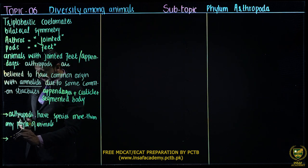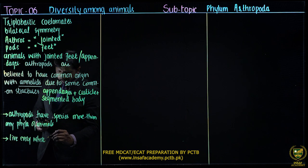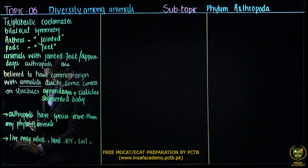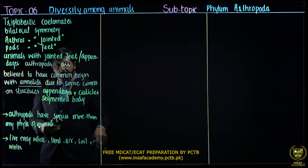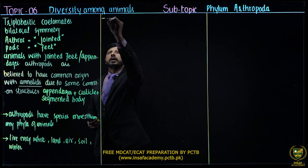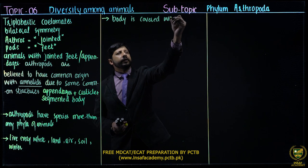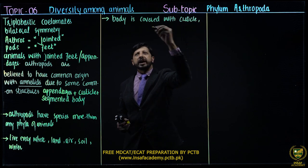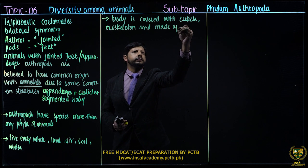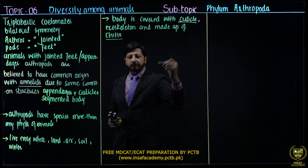They live everywhere: land, air, soil, and water. They are aquatic as well — almost everywhere they are present. Their body is covered with a cuticle that serves as an exoskeleton, and it is made up of chitin.